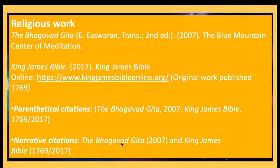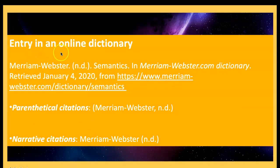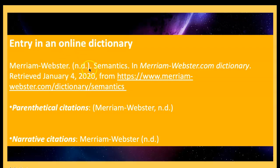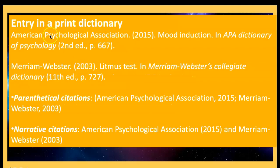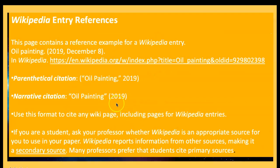For online dictionaries, which many students use for definitions, write the exact date when you retrieved the information and the name of the dictionary. If you don't have a date, put ND. Print dictionaries would have a date and an edition, but online dictionaries often will not have a date.